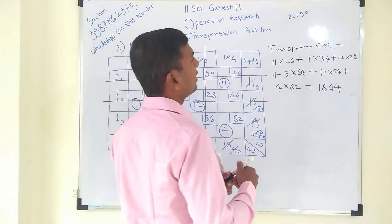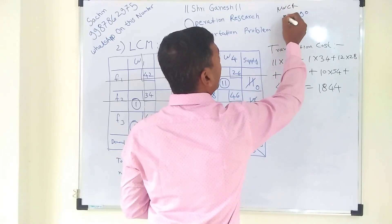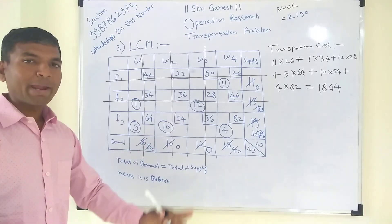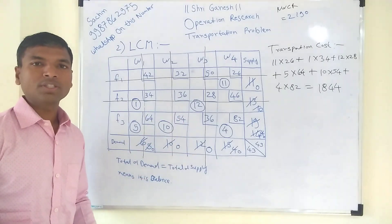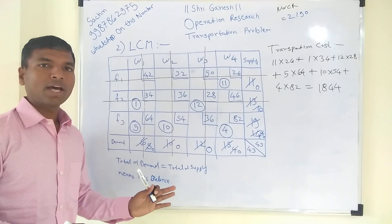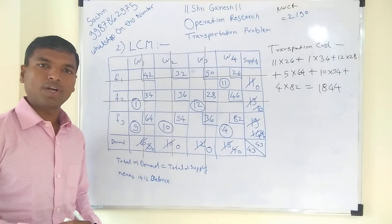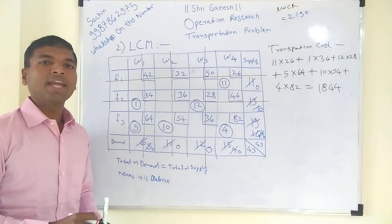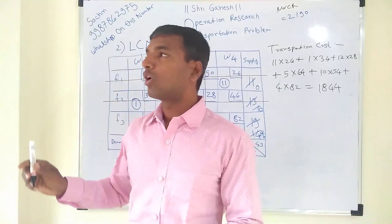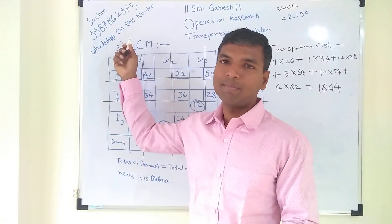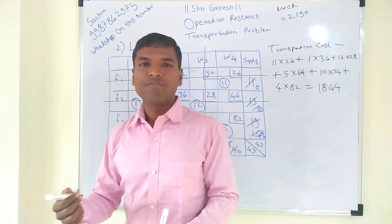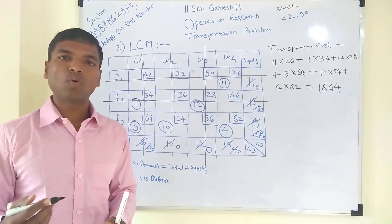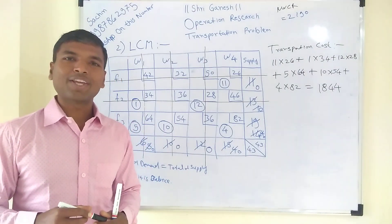With LCM, we got a transportation cost of 1844. Previously, using NWCR on the same problem, we got 2190. LCM reduced the cost, confirming that LCM is more effective than NWCR for calculating transportation cost. For any queries or suggestions, contact me on WhatsApp. My name is Sachin — please leave comments and subscribe to the channel for more videos.